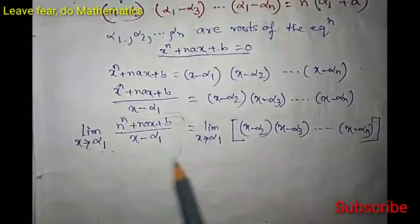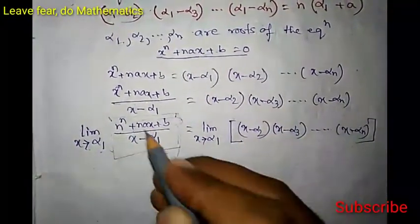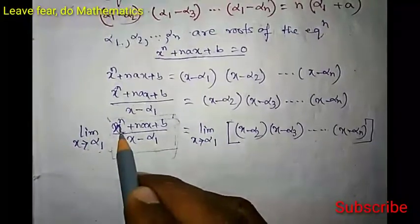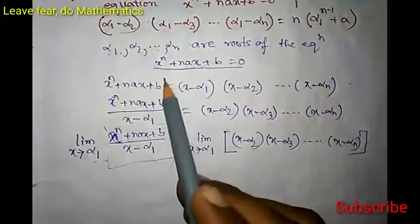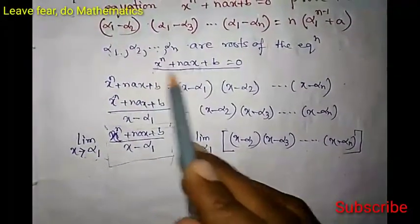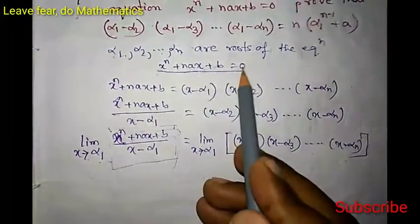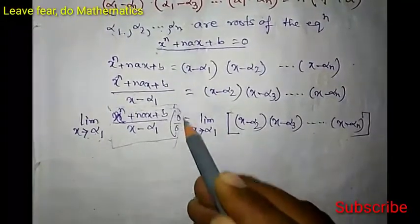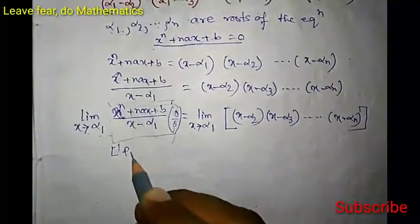If we substitute α₁ into the numerator, we get α₁ⁿ + nα·α₁ + b. But since α₁ is a root of the equation, α₁ⁿ + naα₁ + b = 0, so the numerator gives zero. Similarly the denominator gives zero. So this limit is in 0/0 form, and we can apply L'Hôpital's rule.